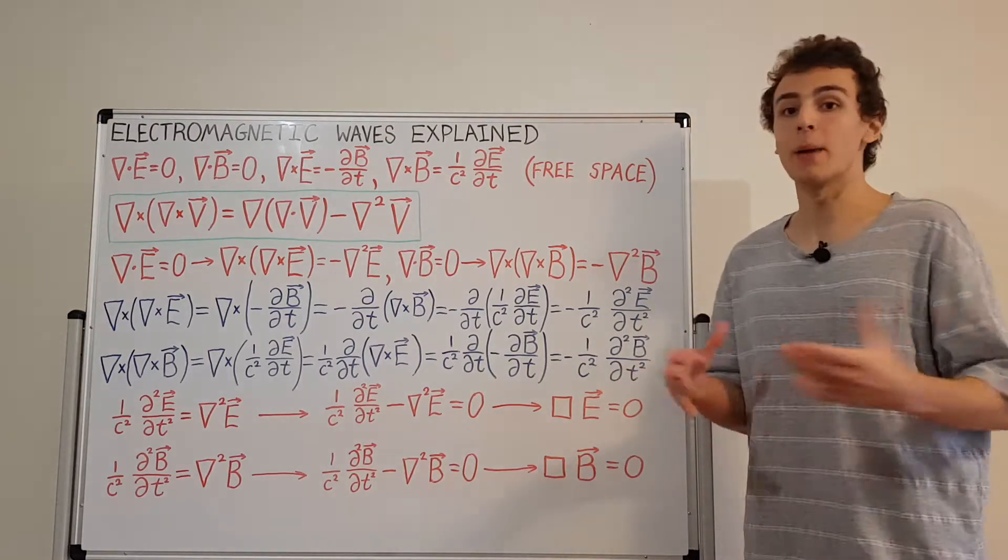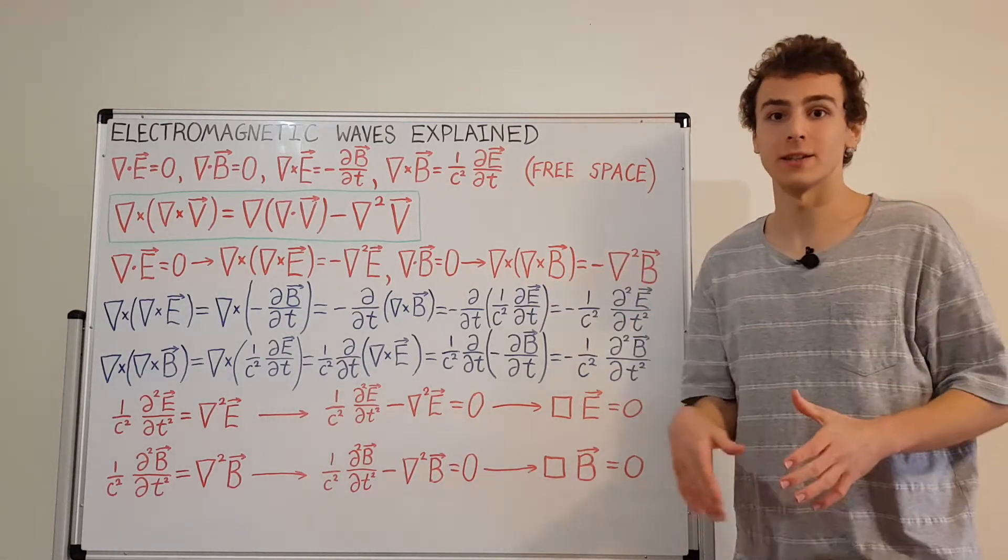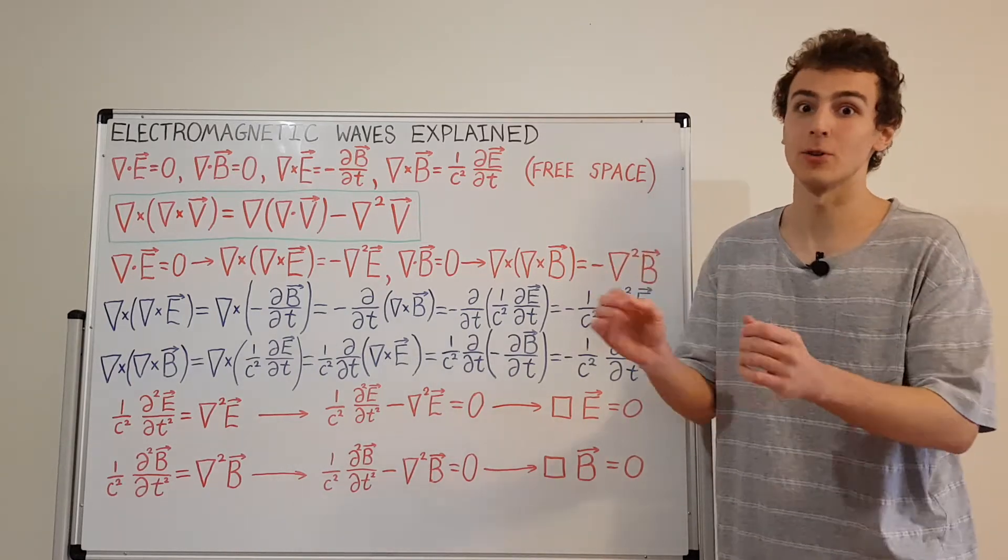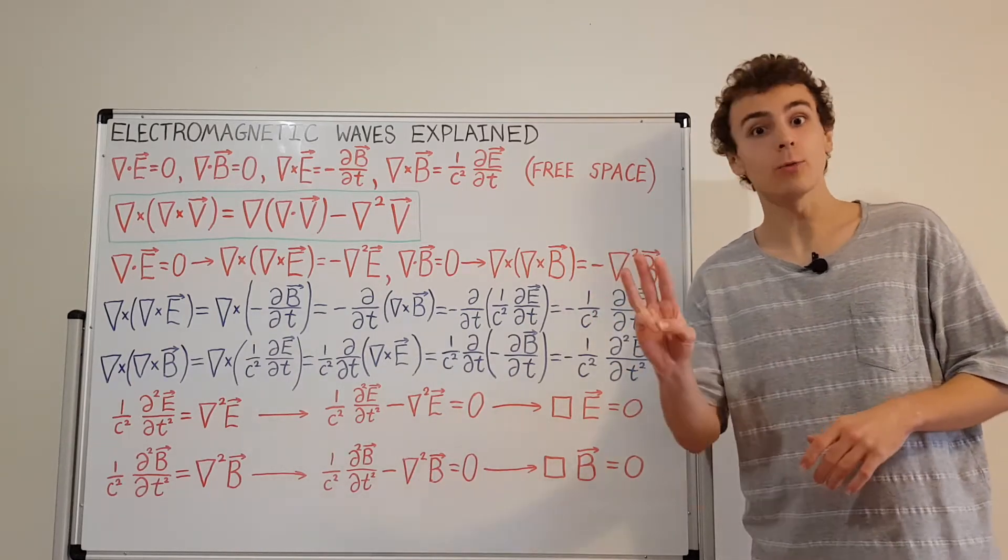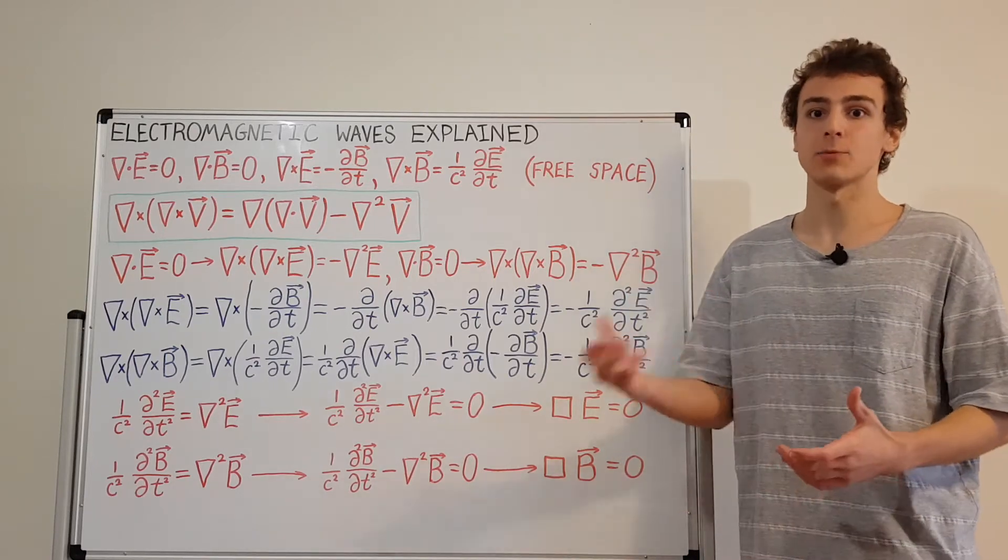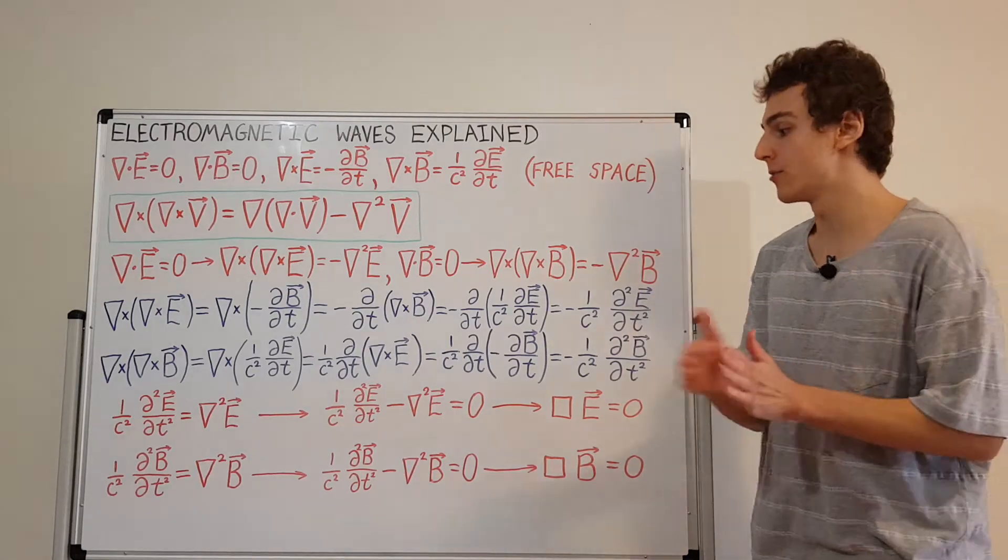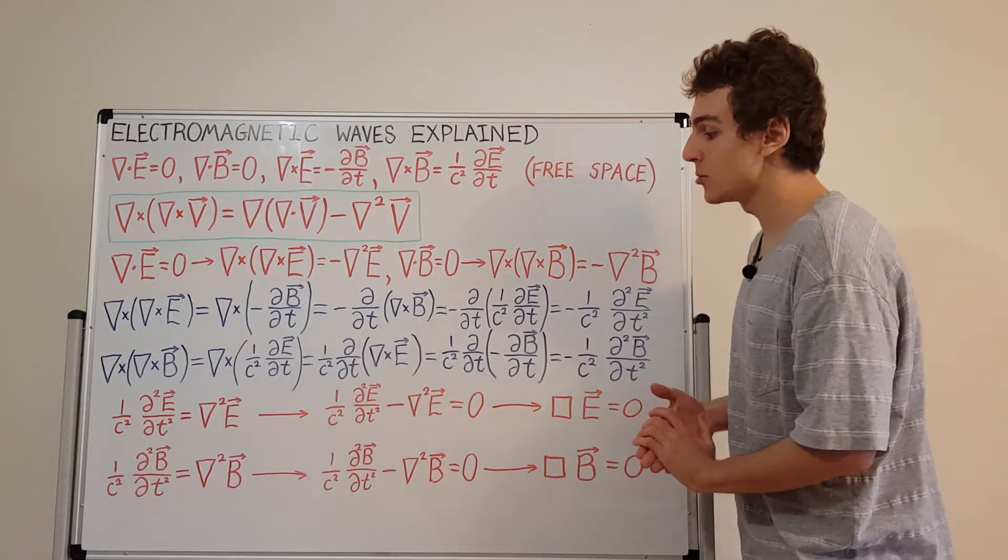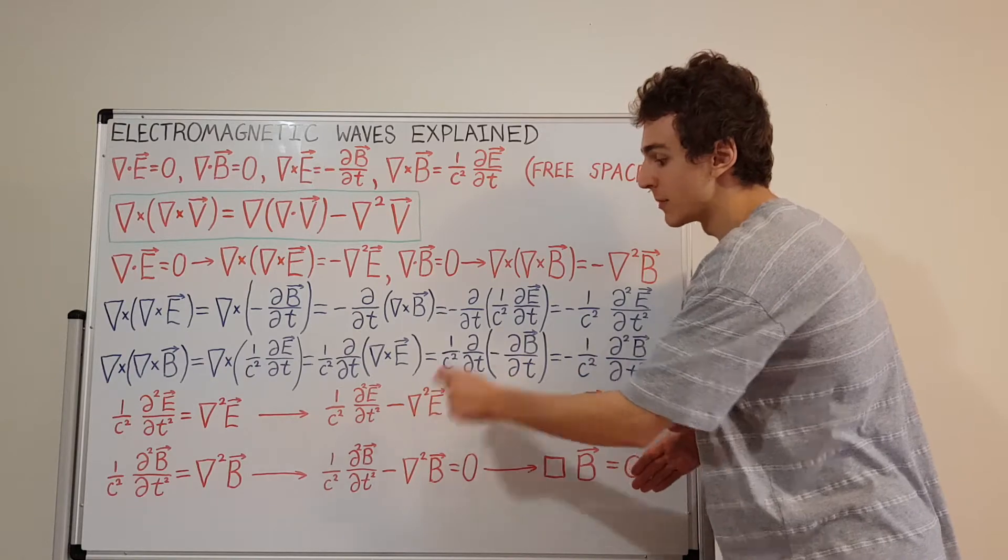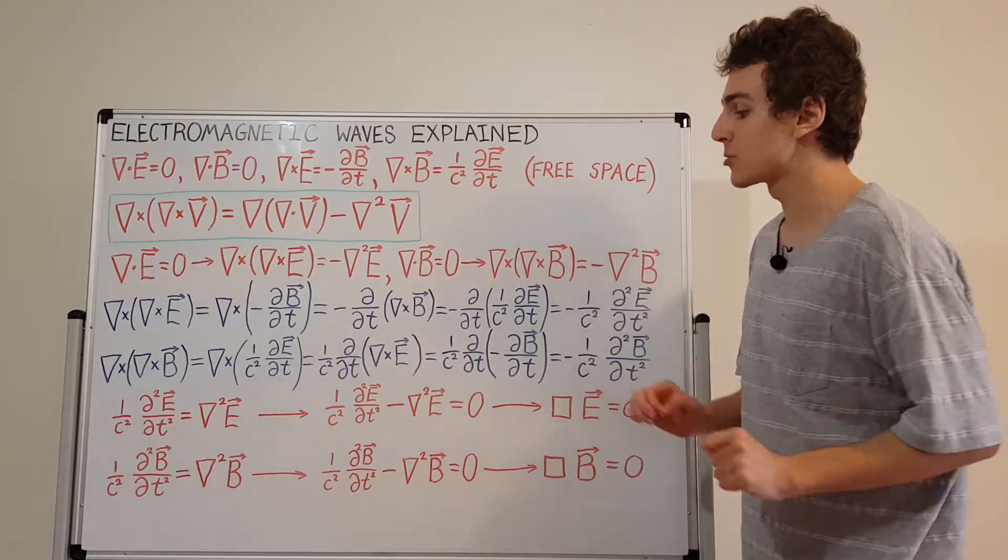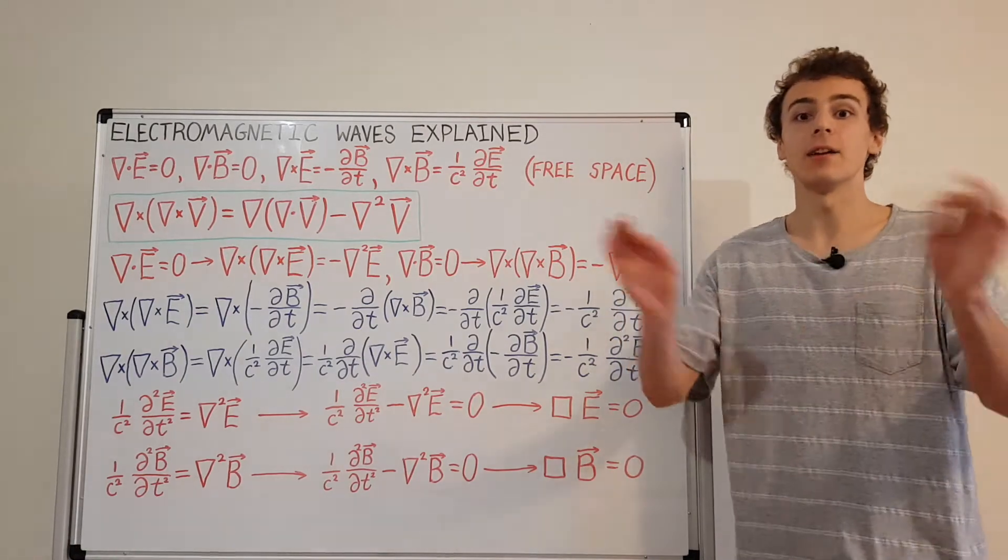So the electric field and magnetic field depend on four different coordinates. They depend on space, which is the spatial location dictated by three coordinates, which in Cartesian coordinates is x, y, and z. And there's one temporal coordinate, which is time. And time is always flowing along. And that's going to tell you where the electric and magnetic waves are in space and how strong the electric field and magnetic field is at every single point.